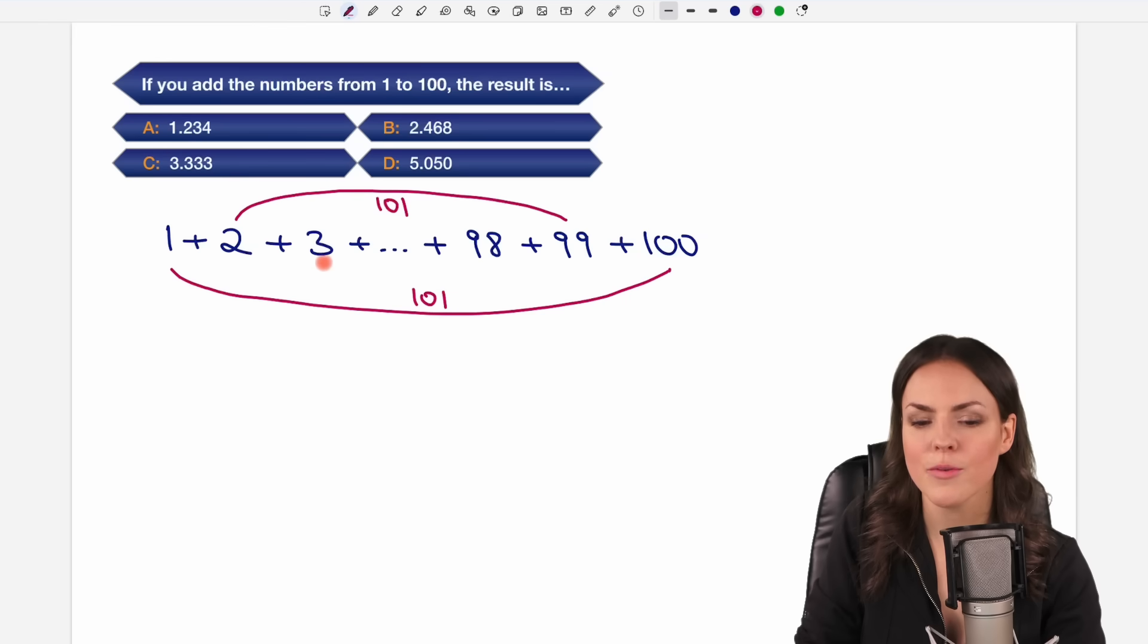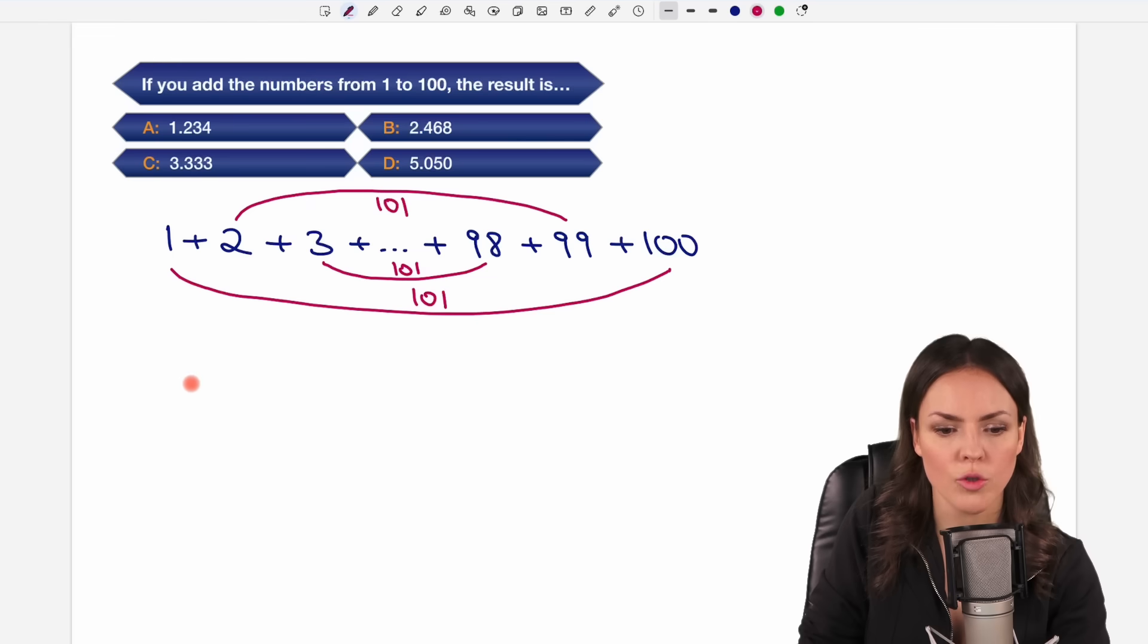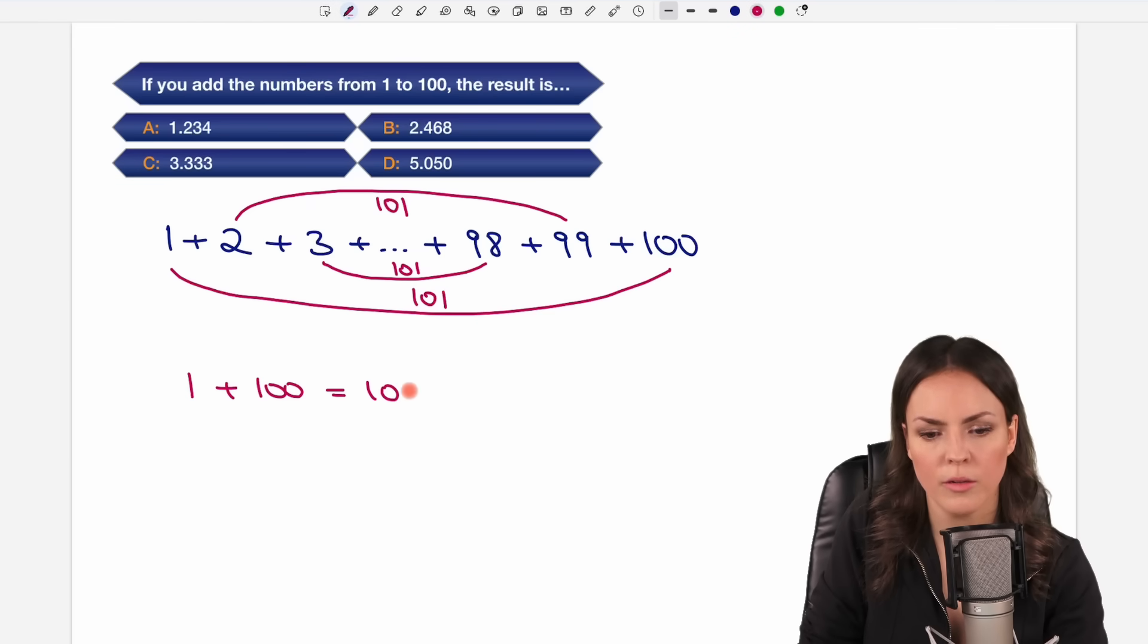Could be a pattern. 3 plus 98 equals 101. So let's write this down. If we add the smallest number to the largest number we get 101. Then we do the 2 and the 99 and we get 101. And so on.